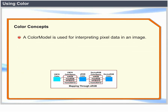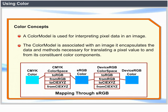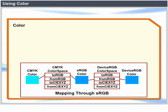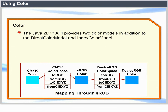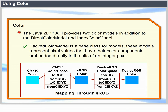Color concepts: A color model is used for interpreting pixel data in an image. It encapsulates the data and methods necessary for translating a pixel value to and from its constituent color components. The Java 2D API provides two color models in addition to DirectColorModel and IndexColorModel. ComponentColorModel can handle an arbitrary color space and an array of color components to match the color space, and can represent most color models on most types of graphics devices. PackedColorModel is a base class for models that represent pixel values with color components embedded directly in the bits of an integer pixel.